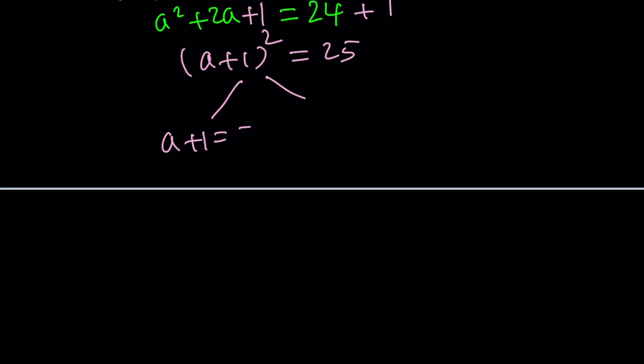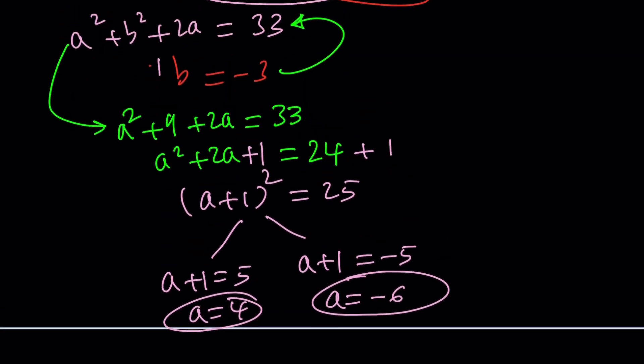a plus 1 is 5. That gives us a equals 4. If a plus 1 is negative 5, because you gotta remember there are two numbers whose square equals 25—those are 5 and negative 5. In the complex world, those I consider the square roots of 25, but in the real world 25 has only one square root. So a can be 4 or a can be negative 6. But b is always negative 3.